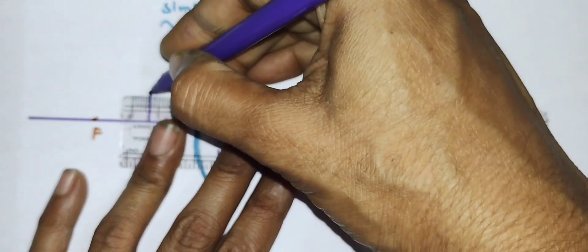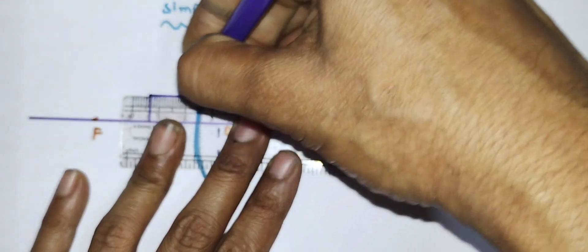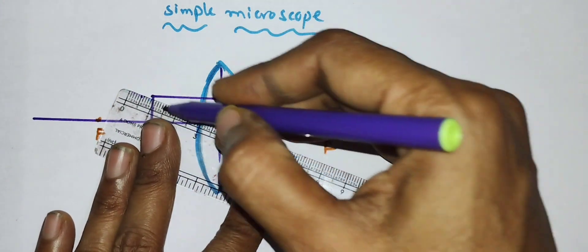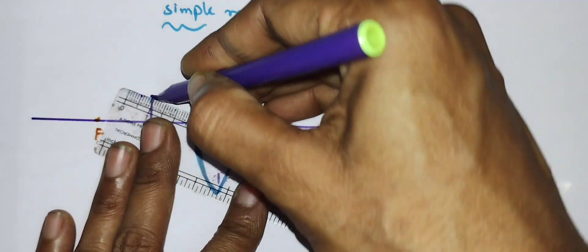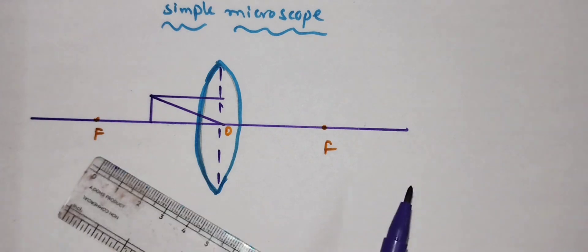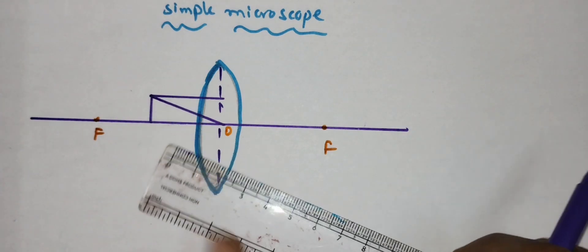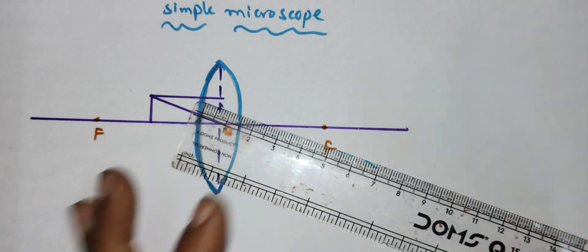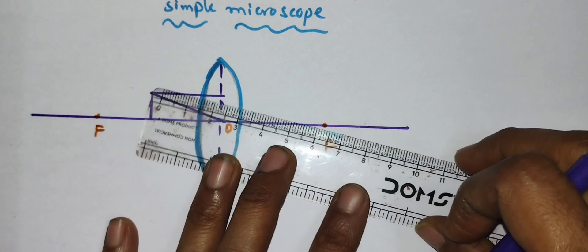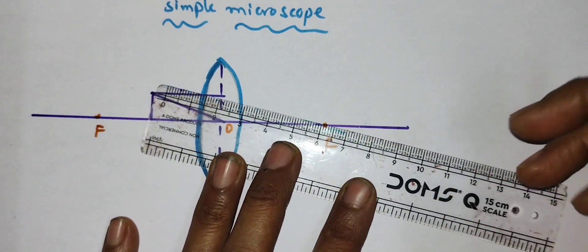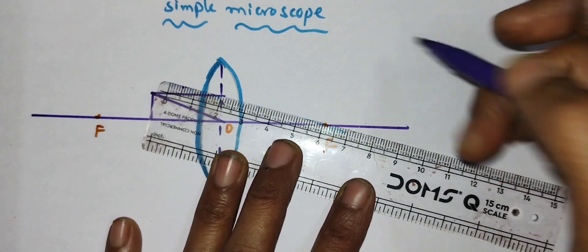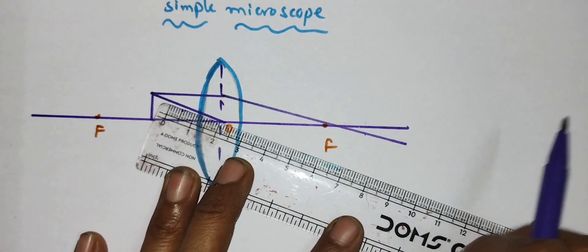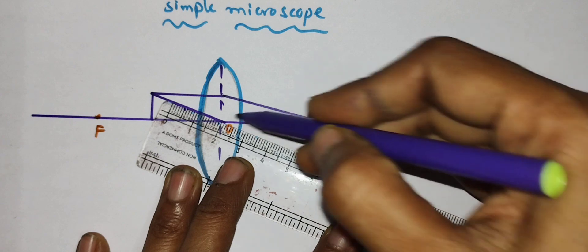We will take two rays here: the ray which is parallel to the principal axis, and the ray which is passing through the optical center. The ray taken parallel to the principal axis, after refraction, should pass through the focus. And the ray passing through the optical center, after refraction, is undeviated. These are the two rays written here.